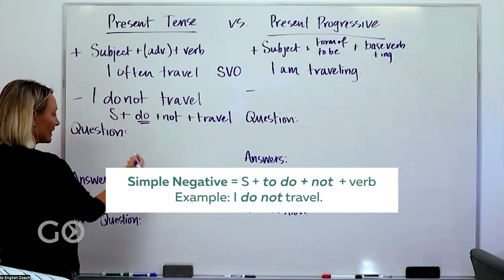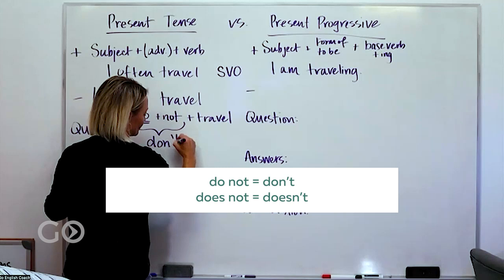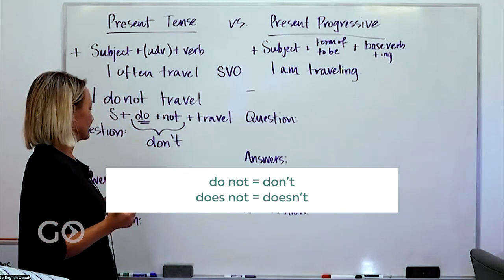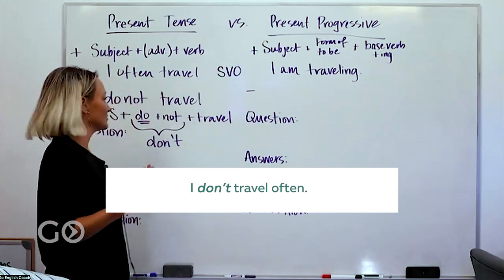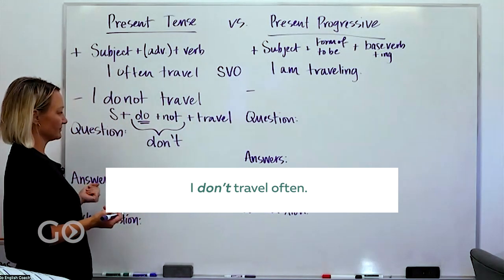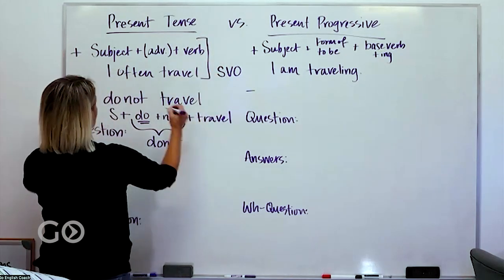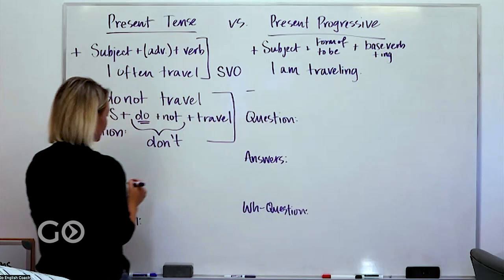And then one aspect of that is most people say don't, I don't travel often, and so we can move that often over to the end. I don't travel often. So that's the formula here for the present with the positive. This is our formula here for the negative.